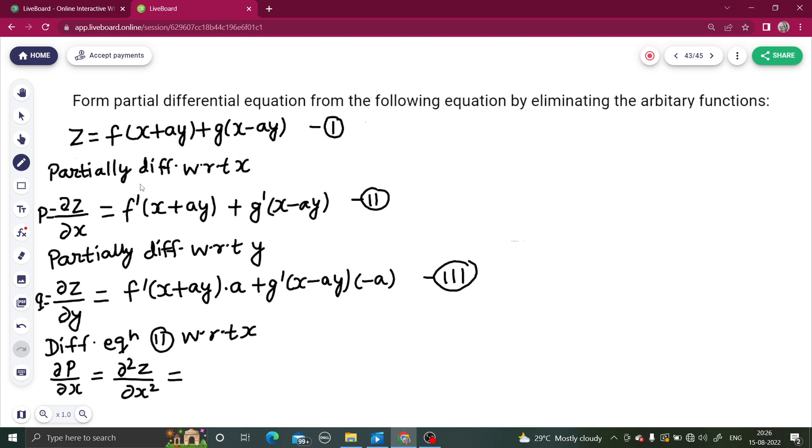Equals to derivative of f dash (x plus ay) is f double dash (x plus ay). You will go inside - derivative of x is 1, that of ay is 0. Same story for g dash. So del 2 z multiplied by 1 - equation number 4. And what is the notation for del 2 z by del x square? It is r. So you write r equals to this.